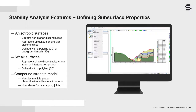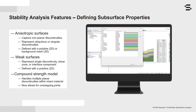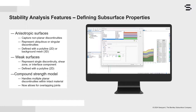Substantial improvements have recently been made to the compound strength material model, particularly to handle multiple planar discontinuities within an intact material. In this release, an additional improvement was included such that the material model can handle overlapping joints. This material model is available for both 2D and 3D stability analyses.